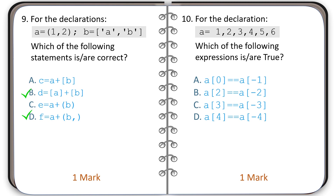Based on the declaration of tuple A, identify which of the given expressions are true. These are boolean expressions — they will be either true or false. You have to identify which expression is true. The correct option is option C.